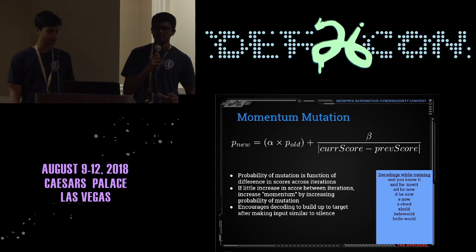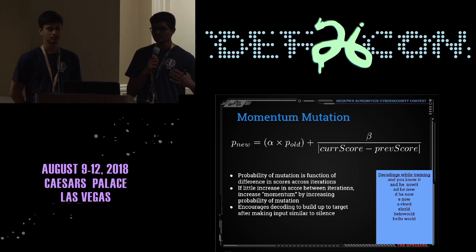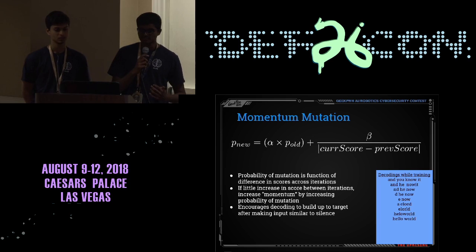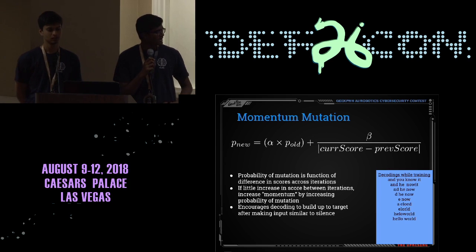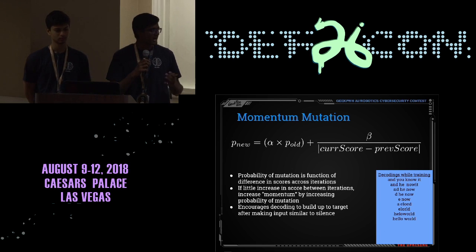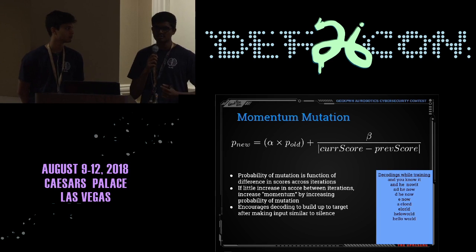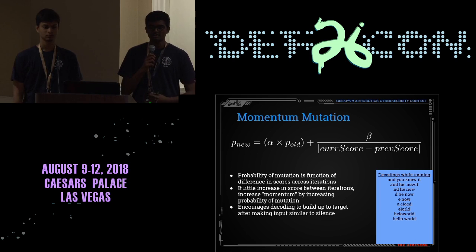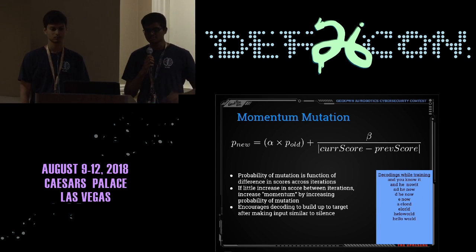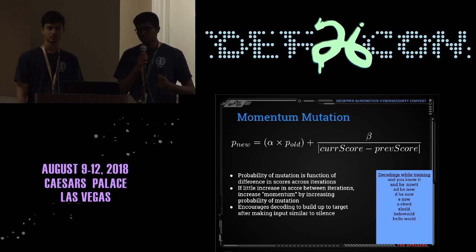Momentum mutation is our unique way of adding mutation. In a standard genetic algorithm, the probability of mutation is static from generation to generation. What we do is make the mutation probability dynamic — a function of the difference in scores across generations. If there's little increase in score between generations, we increase the probability of mutation; if there's a higher score difference, we decrease it. When we see very little increase, we give the algorithm a kick by increasing randomness, allowing us to escape a local minimum and globally optimize.